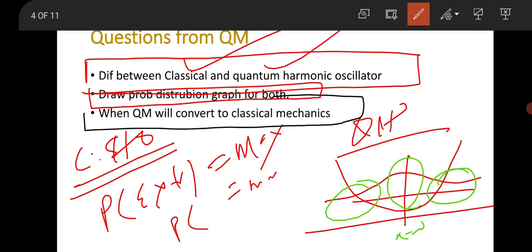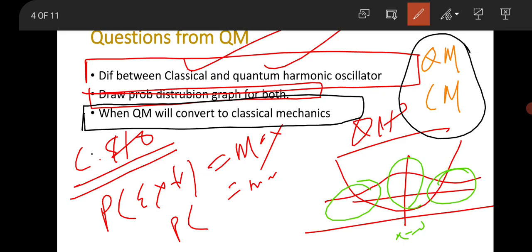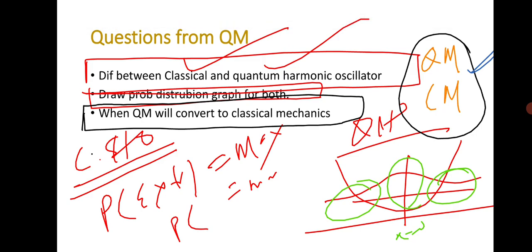The last question from this section was about the correspondence principle — when does quantum mechanics converge to classical mechanics? You can also expect a question about the basic difference between quantum mechanics and classical mechanics. Do not give a superficial BSc-level answer. Think in depth. Most questions I have experienced start from this section, and they expect a very qualitative answer — not simply saying that quantum mechanics deals with small particles. Many students face difficulty answering this, so prepare it very well.